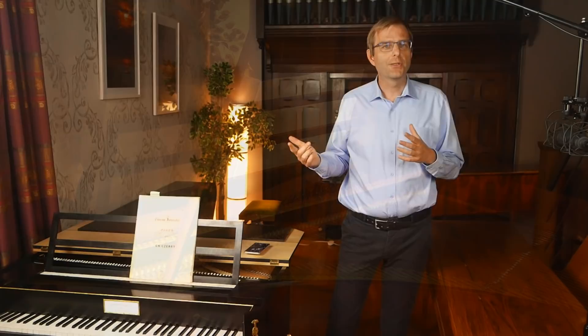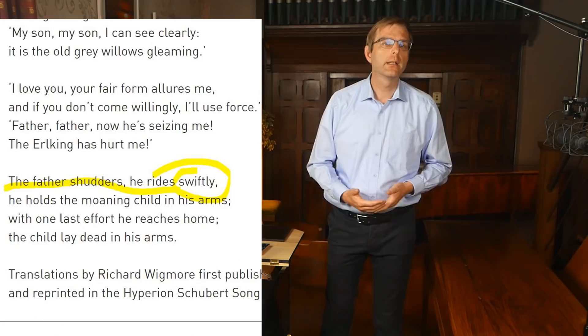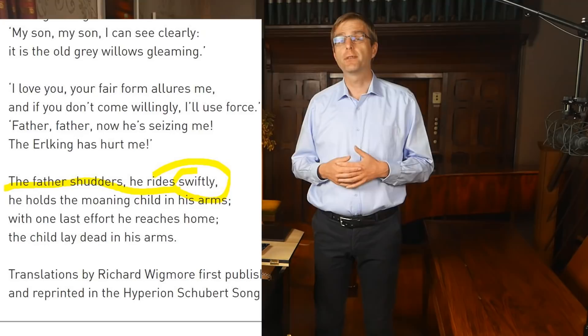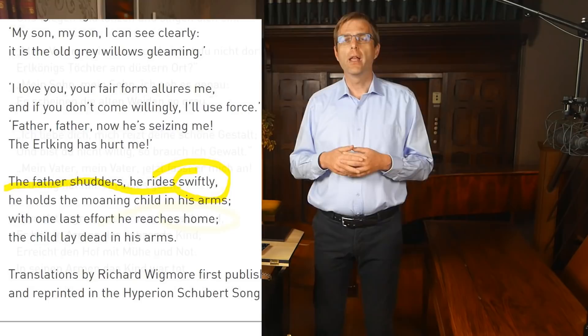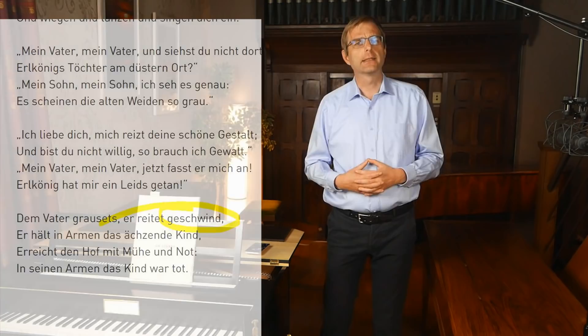I thought: where in the text do I read about the speed of the horse? About the fact the horse gallops? And more especially, in which kind of gallop the horse is riding? Actually nowhere except at the very end. When the father finally accepts the fear of the boy to be real, the narrator says the following: the father shudders, he rides swiftly. In the original version it says 'Er reitet geschwindt.' Probably not by accident, Schubert adds accelerando exactly there.